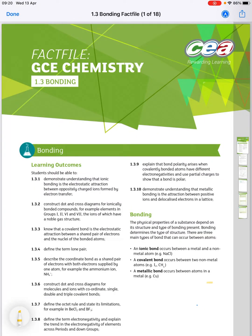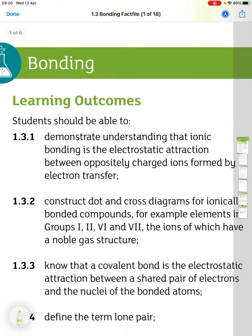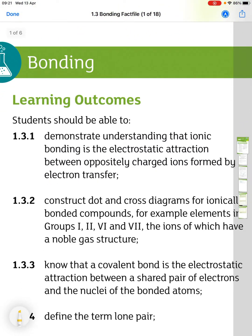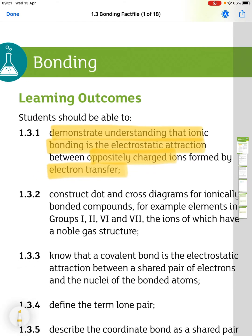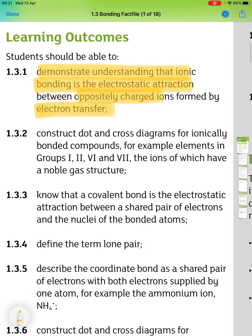This is 1.3 ionic bonding. The first outcome is to demonstrate that ionic bonding is the electrostatic attraction between oppositely charged ions formed by electron transfer. The second part covers dot and cross diagrams for ionically bonded compounds — for example, elements in groups 1, 2, 6 and 7 — the ions of which have a noble gas structure.